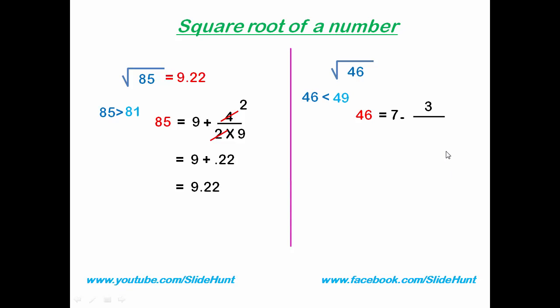So we subtract 3 divided by 2 times this number. 7 times 2 is 14. 3/14 is 0.21, so 7 - 0.21 = 6.79. So the square root of 46 is 6.79. Let's try a large number this time.